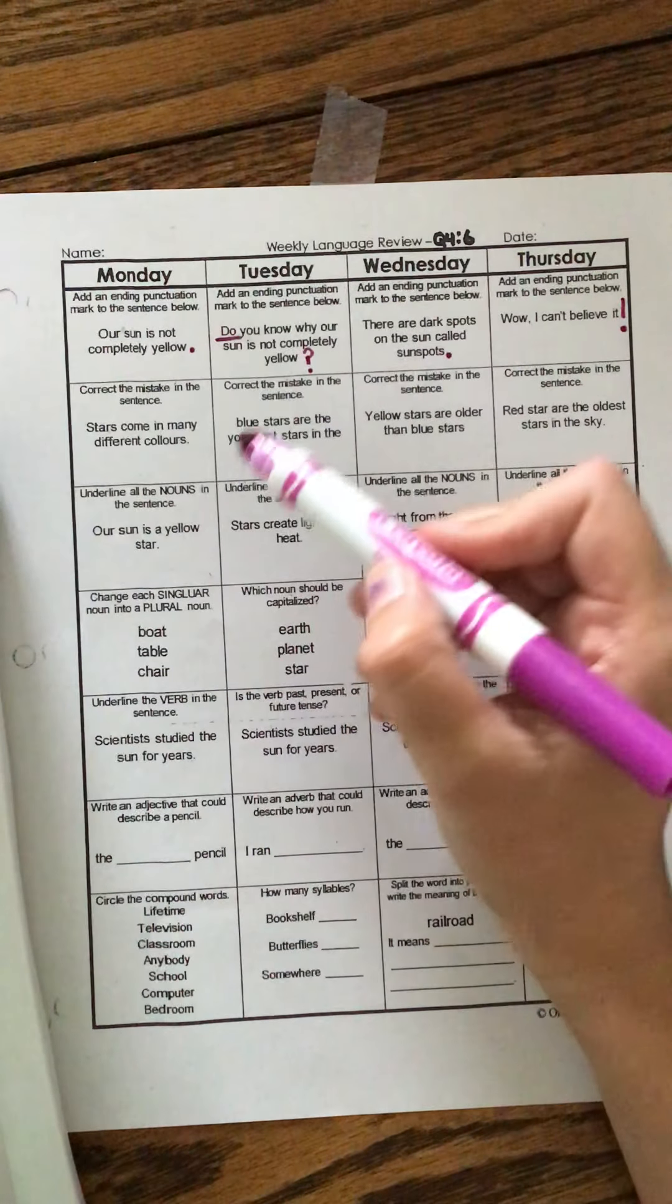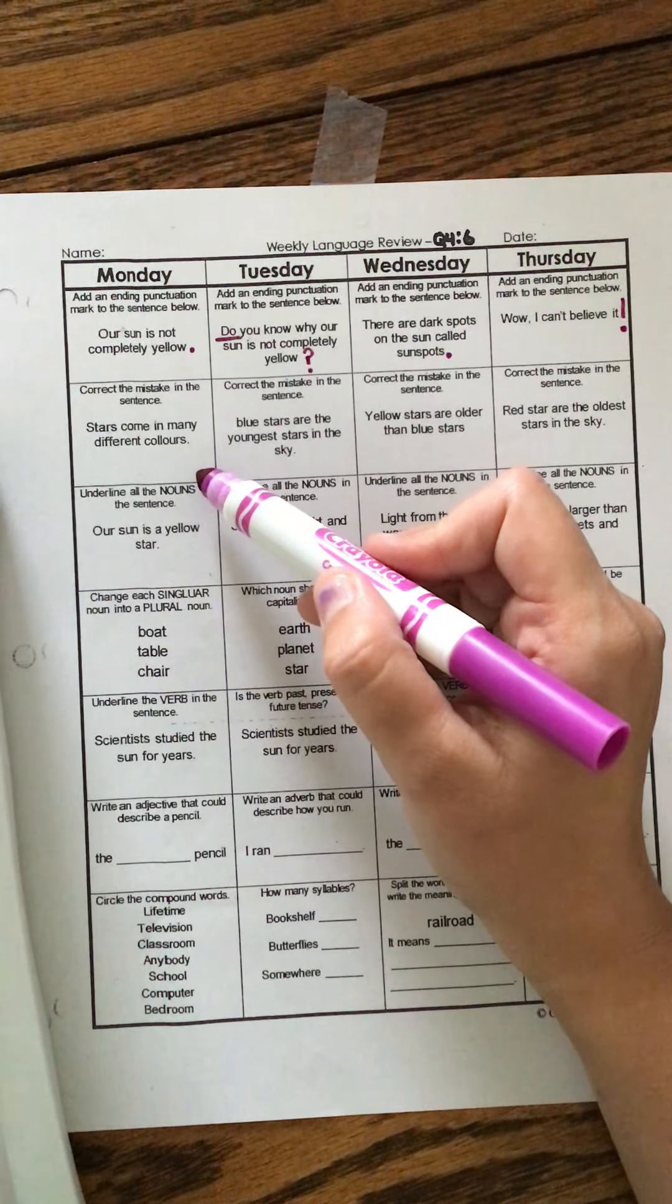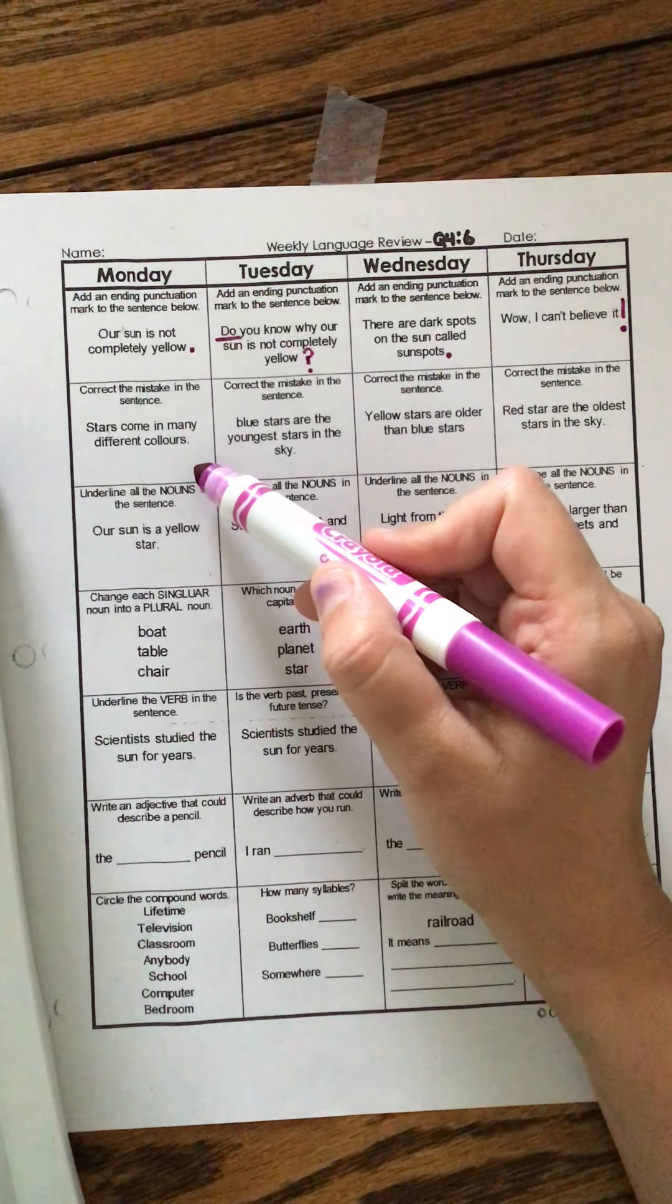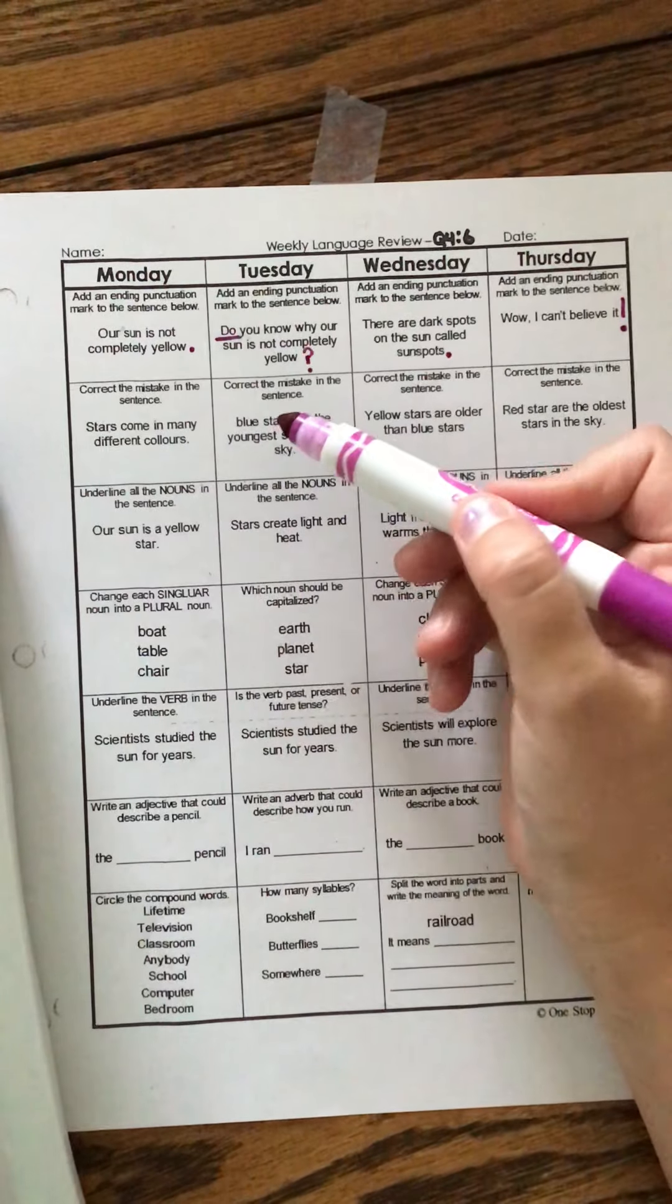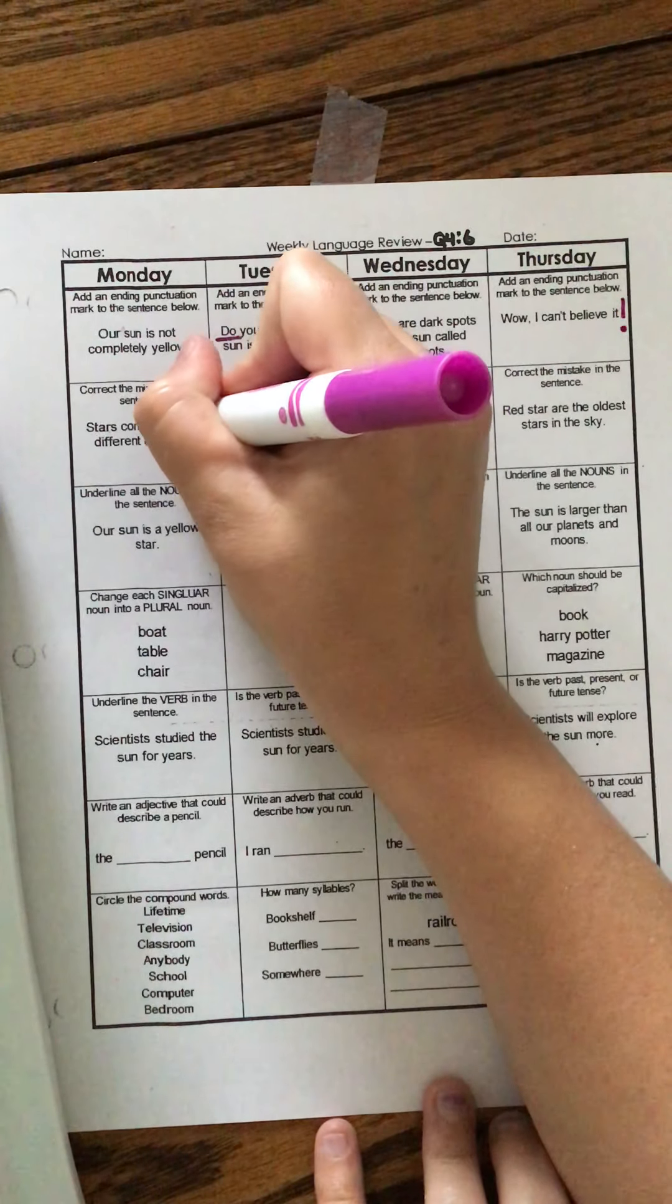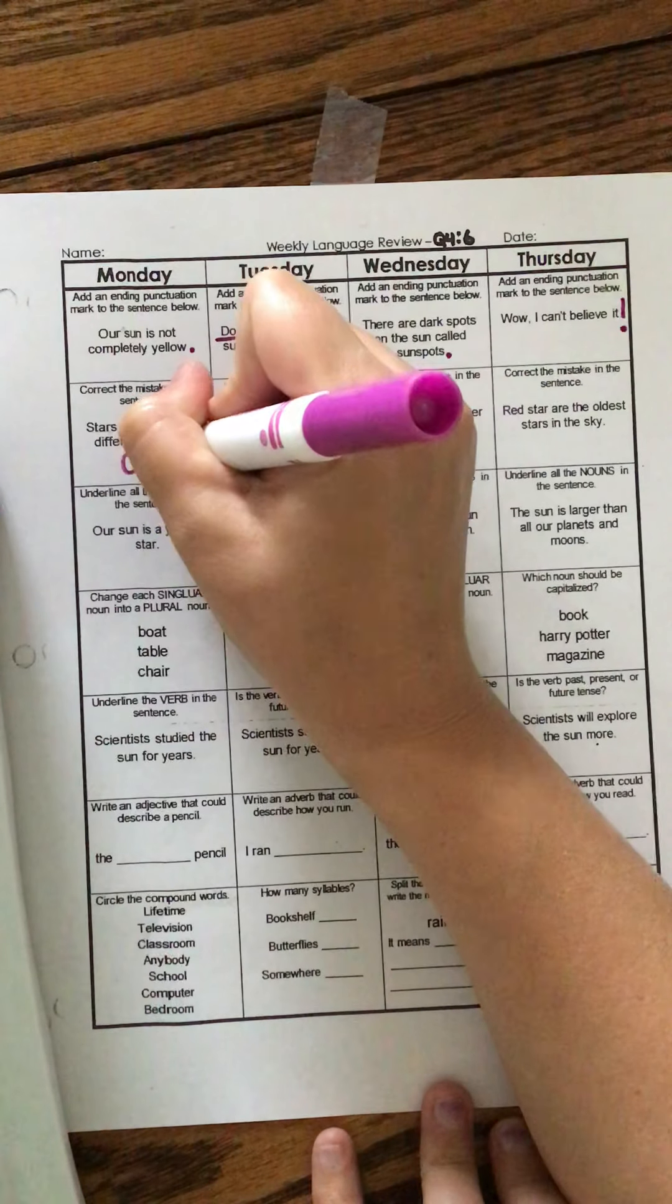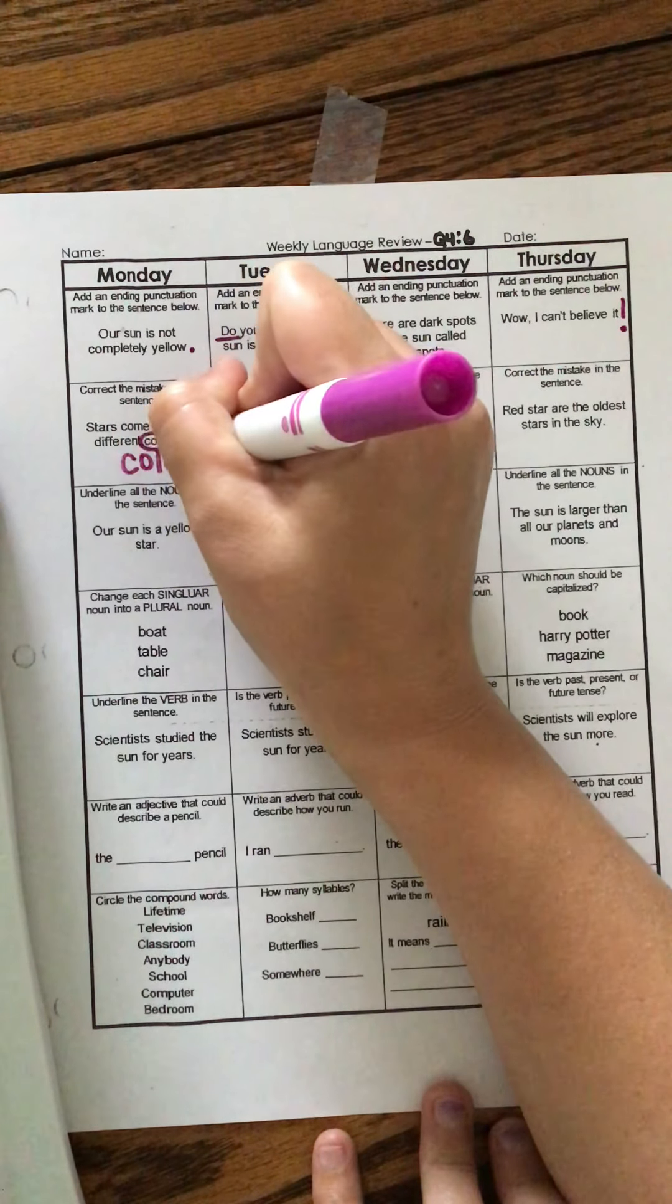Alright, let's go to the second line. Correct the mistake in the sentence. Stars come in many different colors. Hmm, what word doesn't look right. Good. You spell colors. C-O-L-O-R-S.